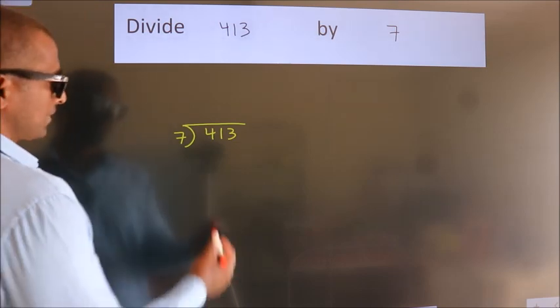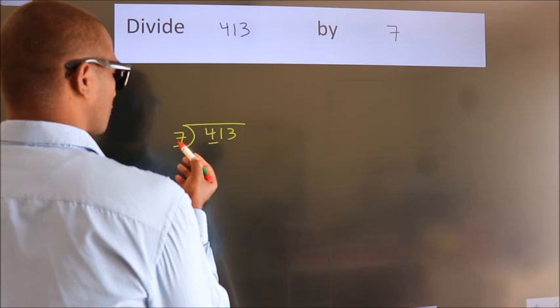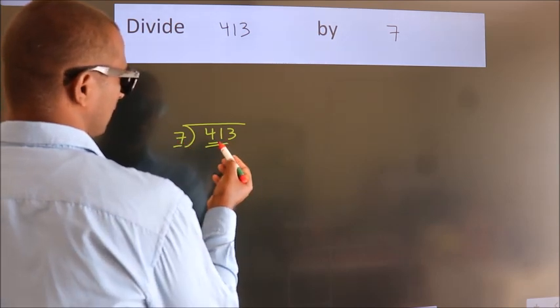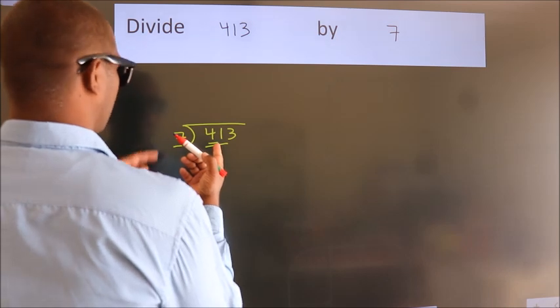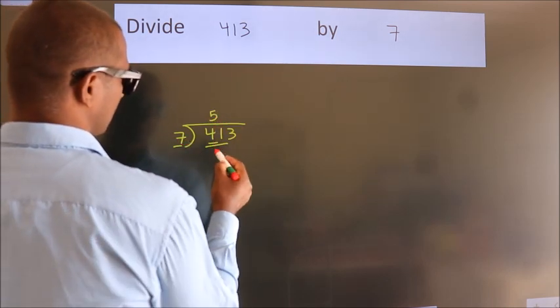Next, here we have 4, here 7. 4 is smaller than 7, so we should take two numbers, 41. A number close to 41 in the 7 table is 7 fives, 35.